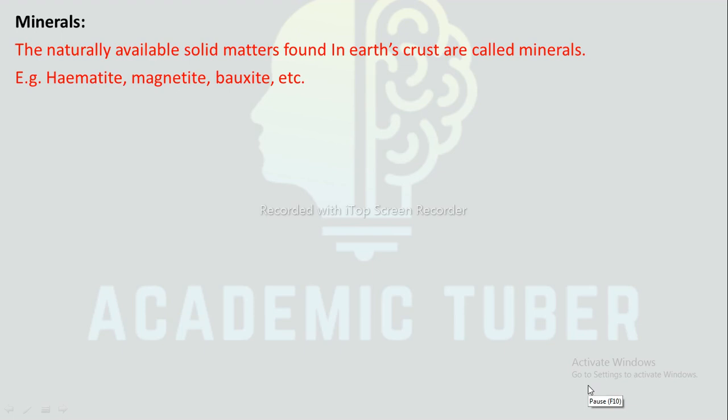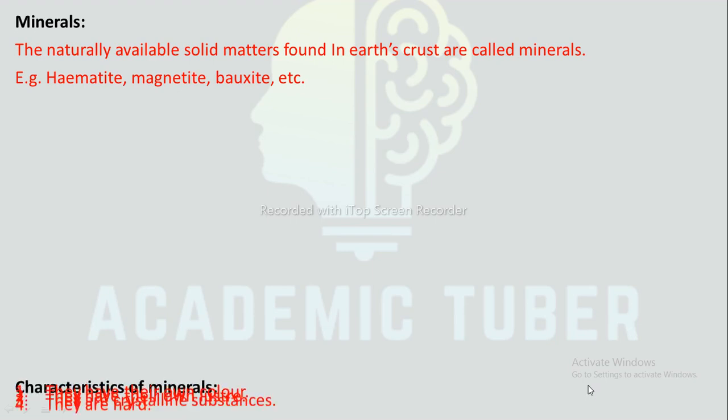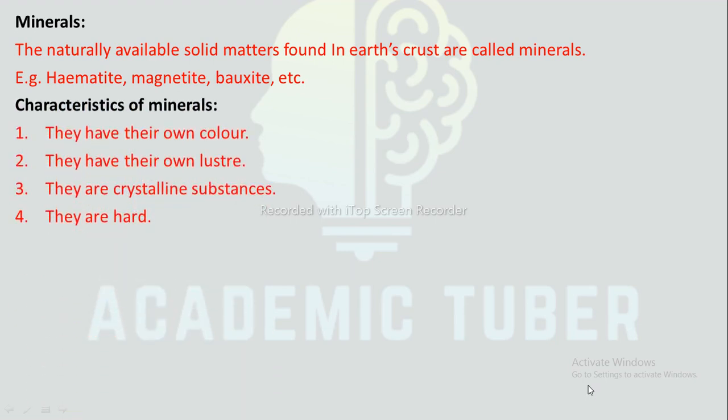Minerals: The naturally available solid matters found in the earth's crust are called minerals. Examples: hematite, magnetite, bauxite, etc. Characteristics of minerals: they have their own color, they have their own lustre, they are crystalline substances, and they are hard.